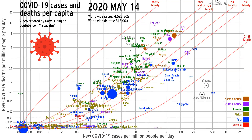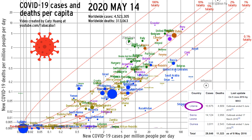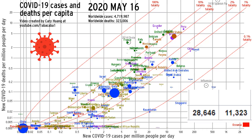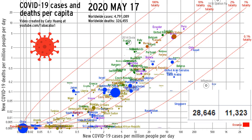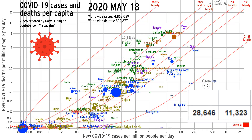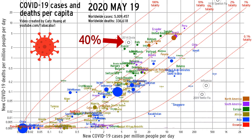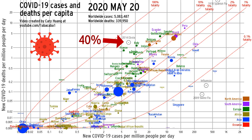Meanwhile, for the 2014 Ebola outbreak, which affected the countries of Liberia, Sierra Leone, and Guinea, there were only 28,000 cases and 11,000 deaths, resulting in a fatality rate of a staggering 40%.